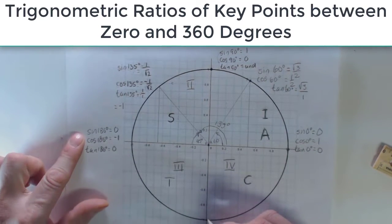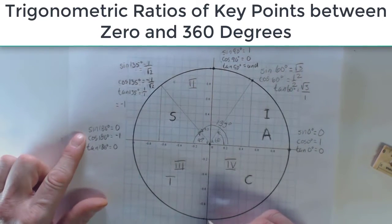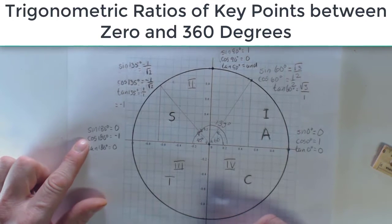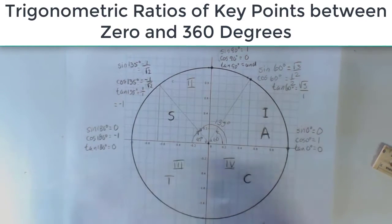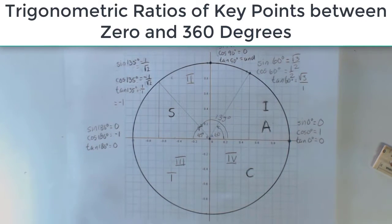And down here, you can probably guess sine is going to be negative one. Cosine is going to be zero. Tangent is going to be undefined again. And so those are the angles that aren't 30, 60, 90, but are nonetheless special.